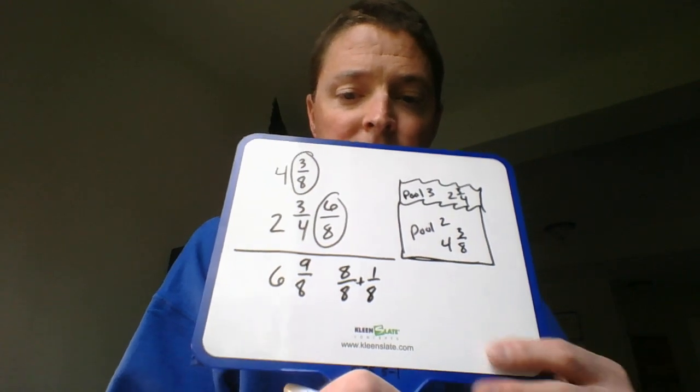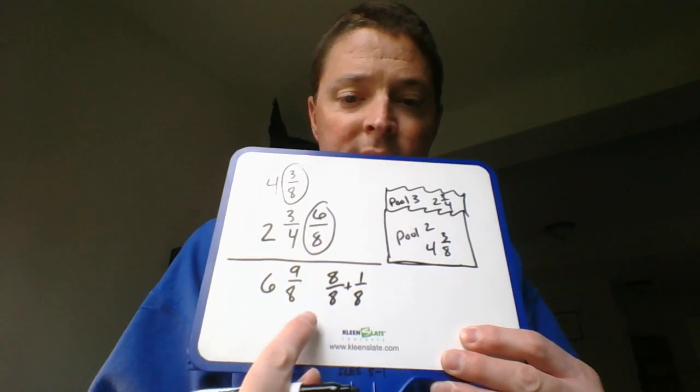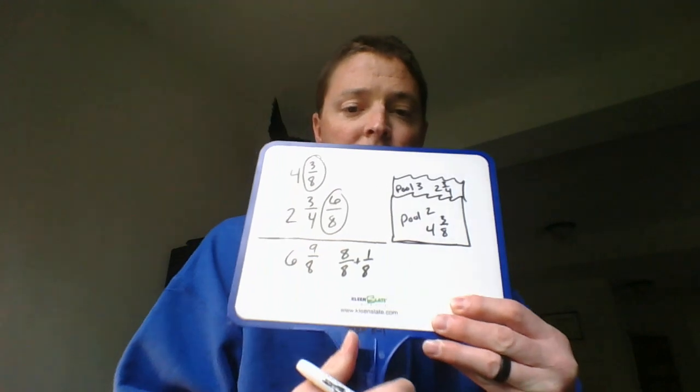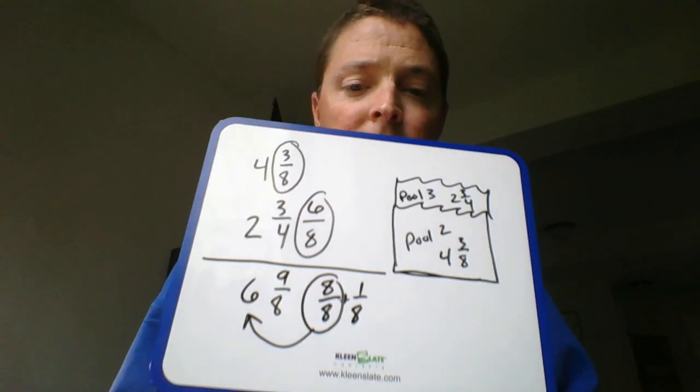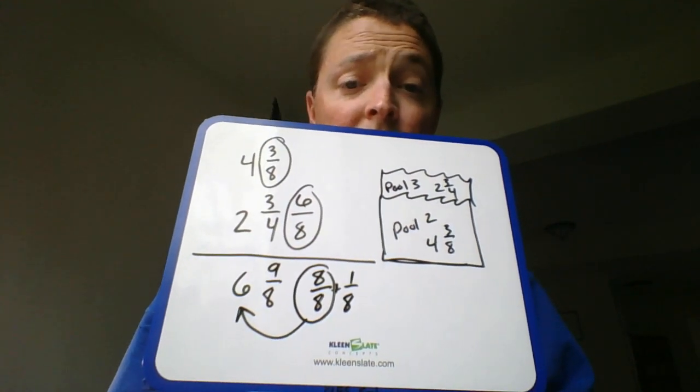He realized that nine-eighths was made up of eight-eighths plus one more eighth. In other words, this nine-eighths is the same exact thing as those two things. Now, what's cool about that is that eight-eighths is large enough to be another whole.